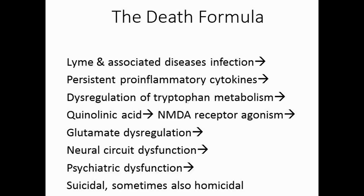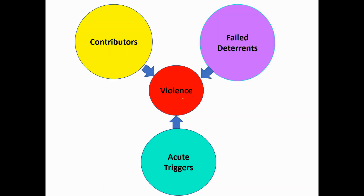There's a sequence of physiological events that is similar with both suicide and homicide. When using the basic violence model, Lyme disease can cause a number of impairments that can increase contributors, compromise deterrence, and increase acute triggers. Collectively, this increases the potential for violence and may result in fatal consequences.